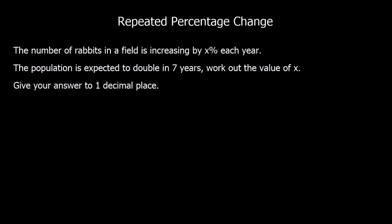OK, here's a different question. So the number of rabbits in a field is increasing by X percent each year. So we don't know what it's increasing by, we don't know the percentage. The population is expected to double in seven years. Work out the value of X and give your answer to one decimal place.